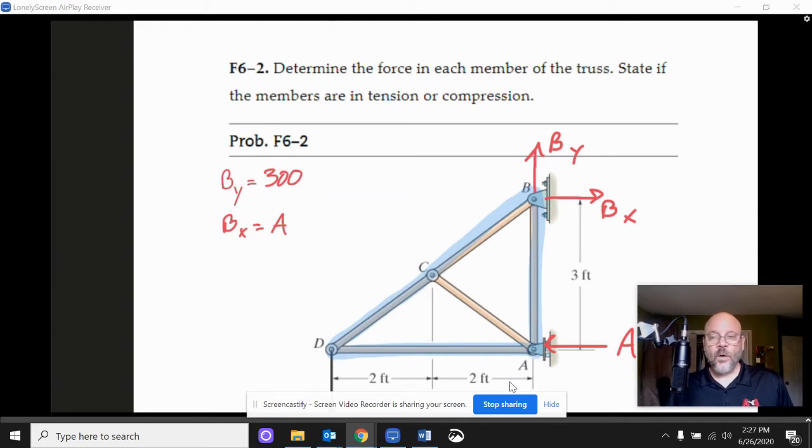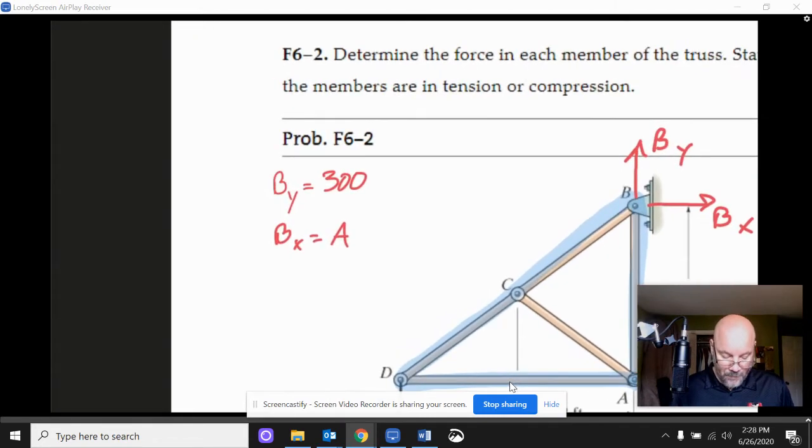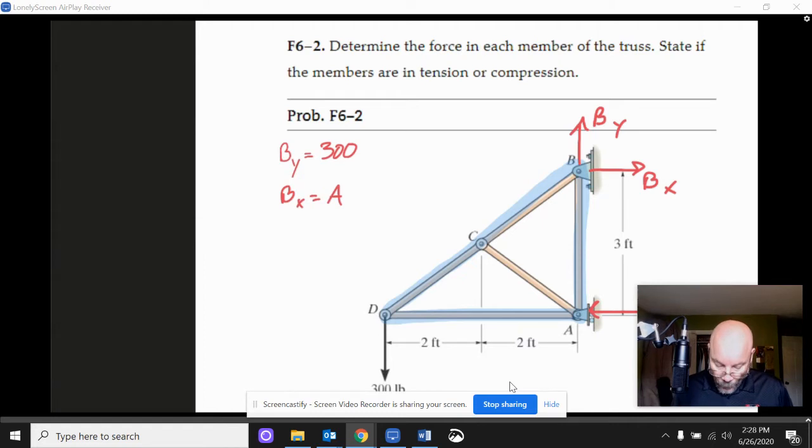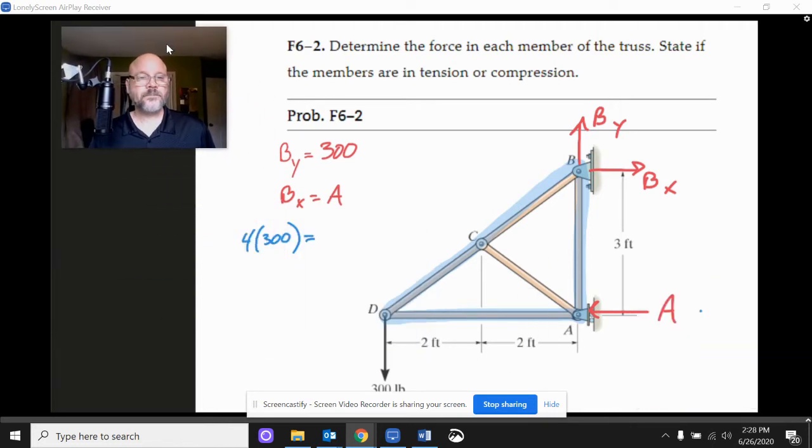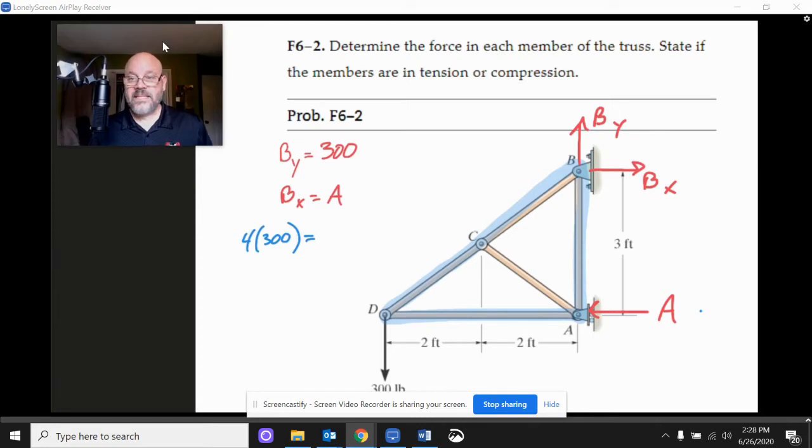Okay, so BY and 300 produce a moment couple, which is equal to the magnitude of the force times the distance between them. The distance between them is four. And so we're going to have four times 300. And that's going to be counteracted by the other force couple. Let me get my head out of the way. A and BX, and they're separated by three. So I'm just going to put here three A. And so that tells us we do the math on that, and that tells us that A is going to have to be 400, and so is BX.